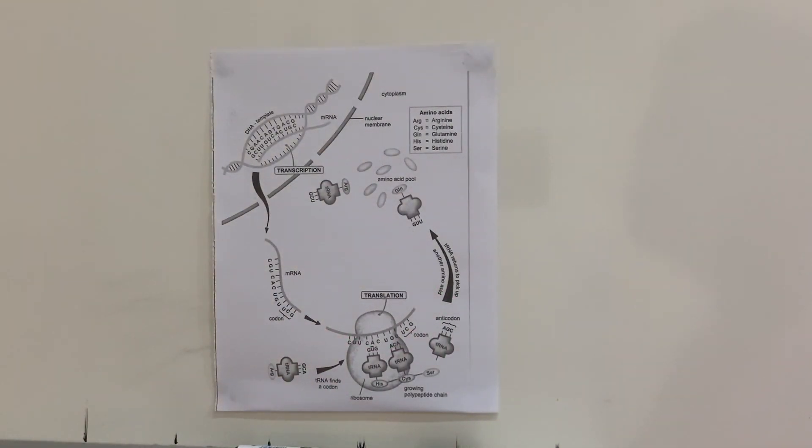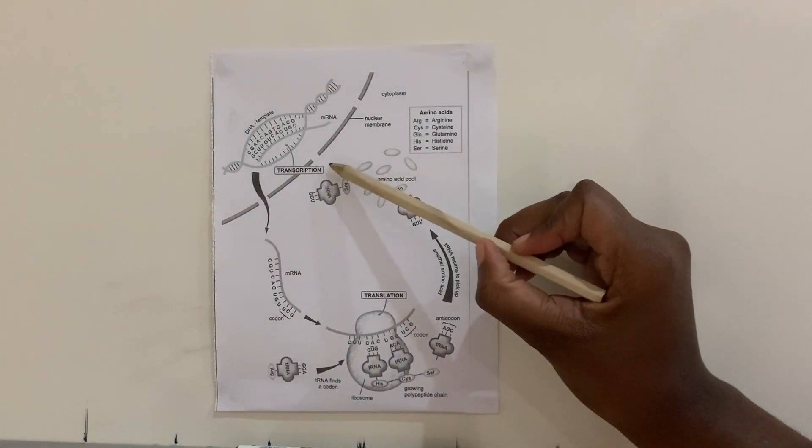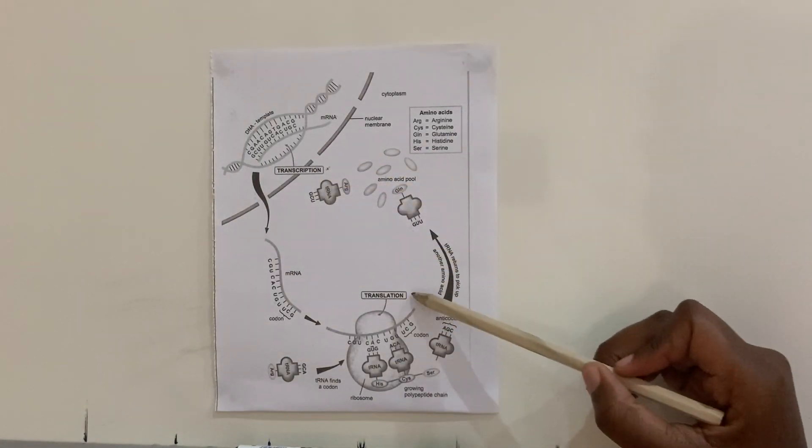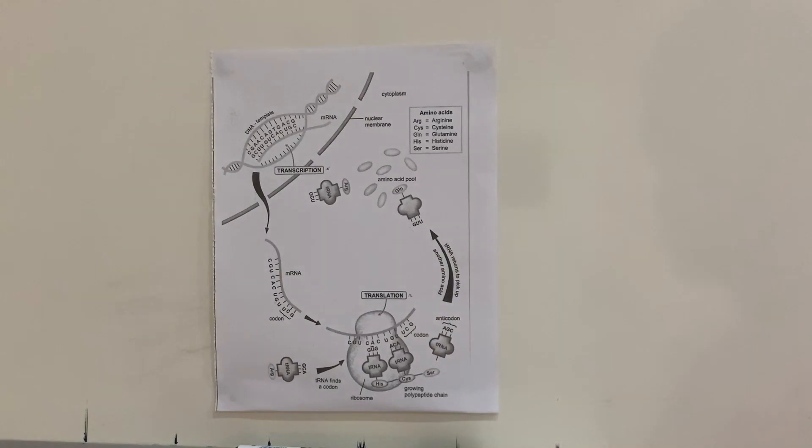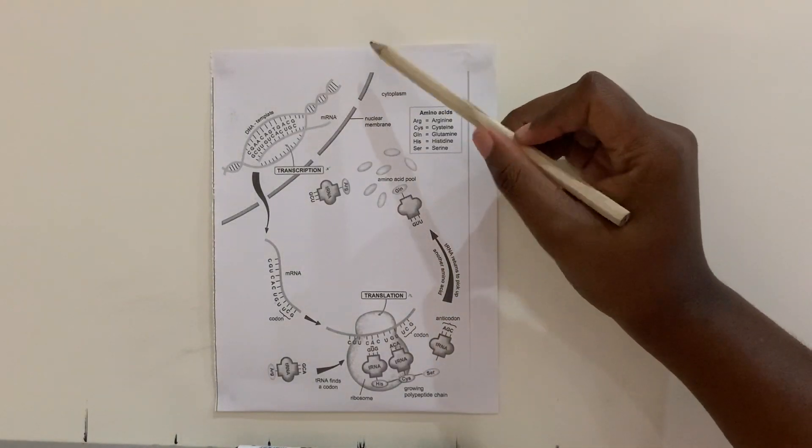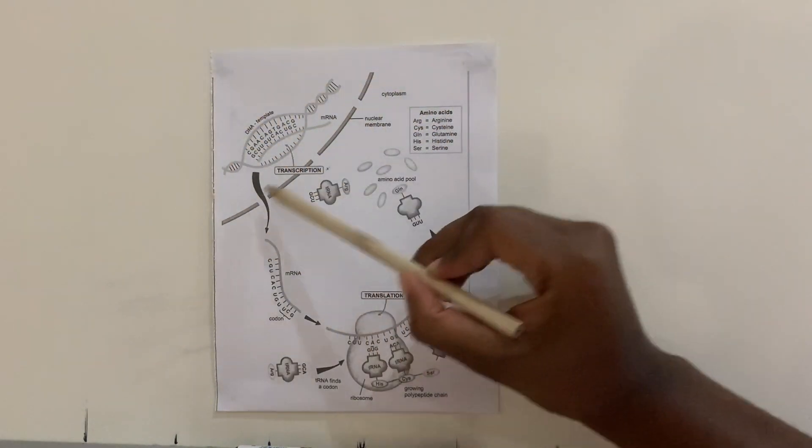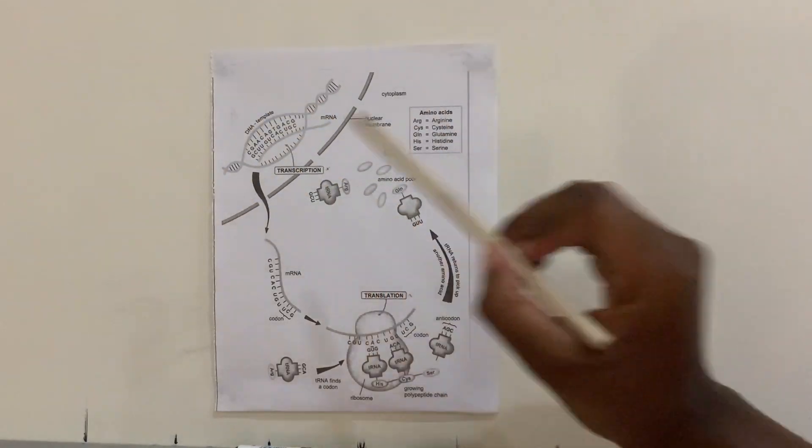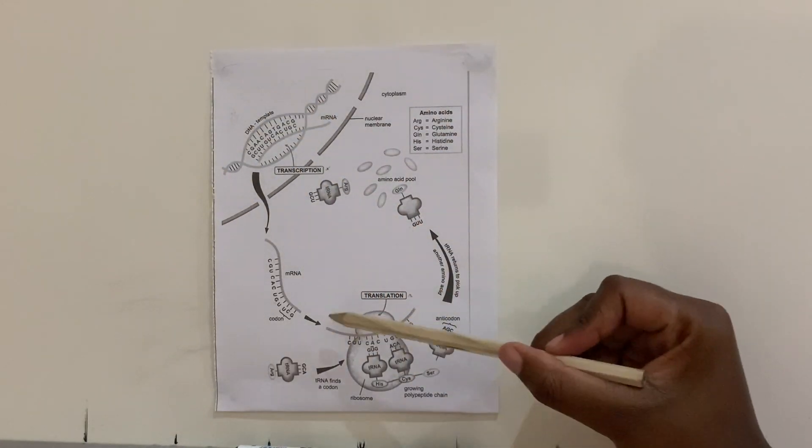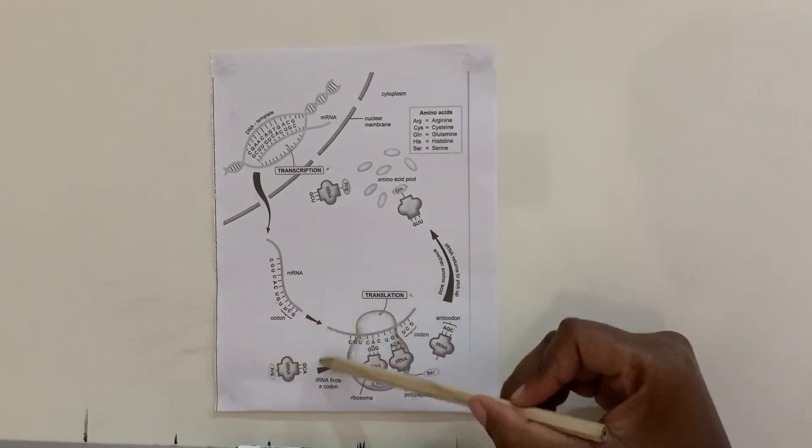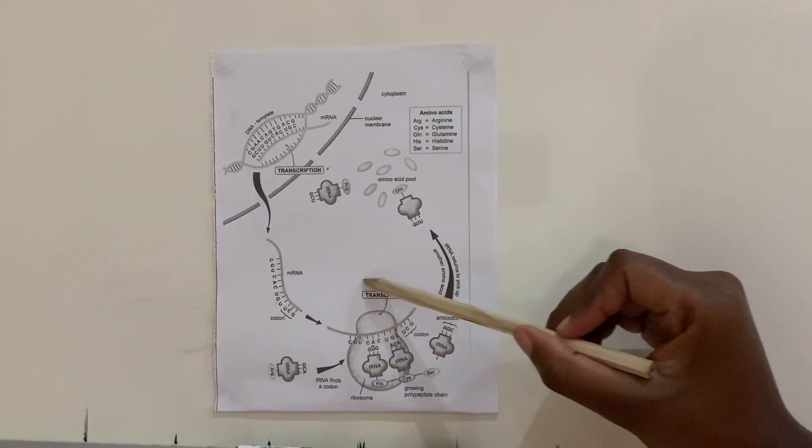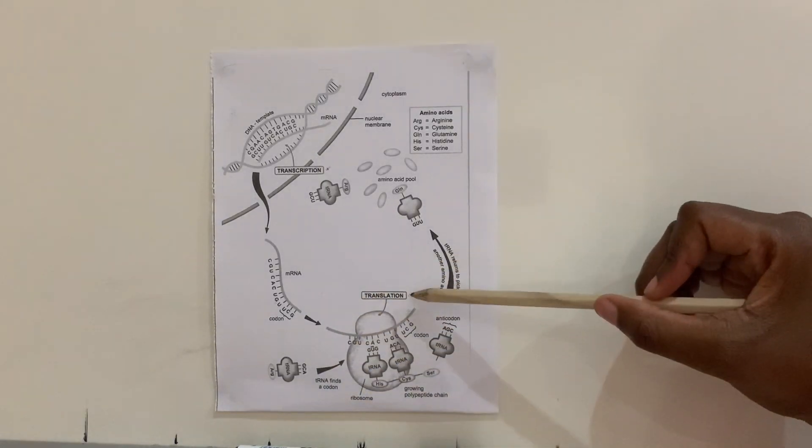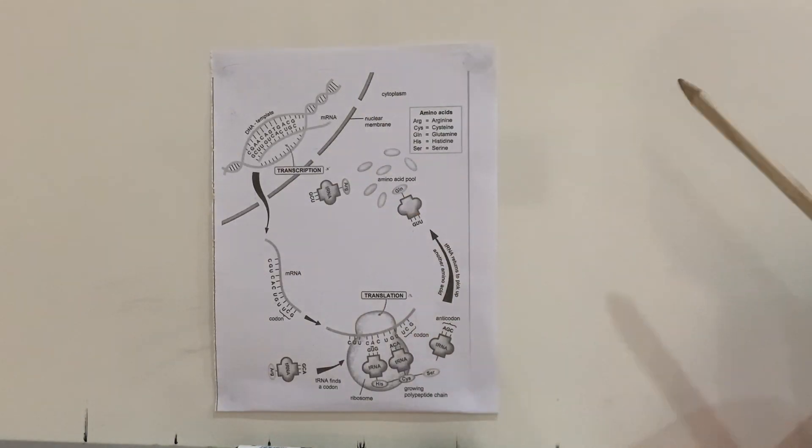Okay, so what you need to know is that protein synthesis has two phases, namely transcription and translation. Transcription happens in the nucleus, as indicated in the diagram, and translation takes place on the ribosome. Those are the two phases.